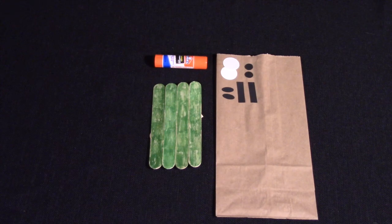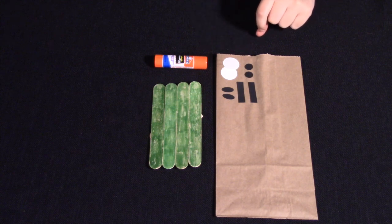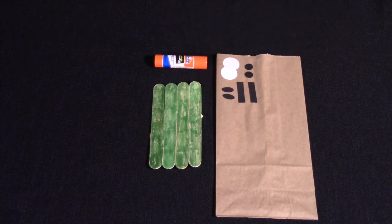Step 2. Glue down the black rectangles for the dragon's eyebrows, the black and white circles for its eyes, and the black ovals for its nostrils.